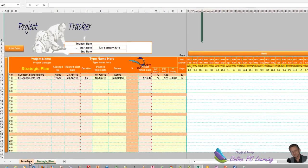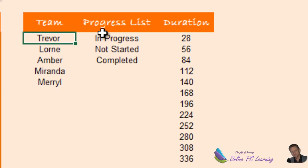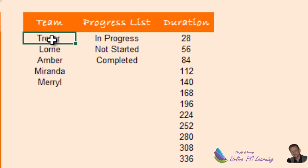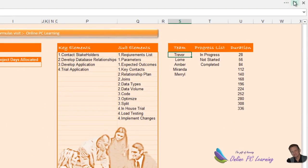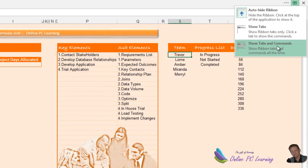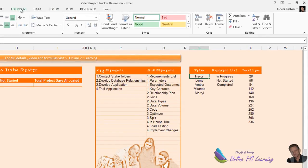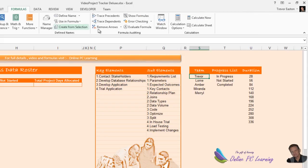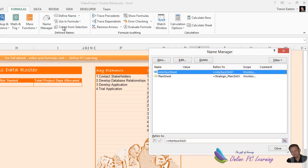These three dynamic named ranges are on our interface sheet. We want a dynamic named range for team members, for our progress list, and for duration. If you're not familiar with how dynamic named ranges work, they simply use an OFFSET formula doing a count and then establishing the range. I'll do the first one, then show you how to copy the other two. We'll unhide the ribbon and go to the formula bar.